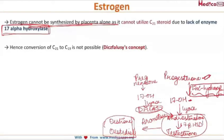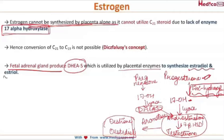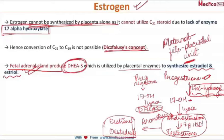So from where does this estrogen come? We have the fetal adrenal glands, which produce DHEAS — dihydroepiandrosterone. This is utilized by placental enzymes to synthesize estradiol and estriol. So the placenta depends upon precursors from the fetal adrenal gland and from maternal sources for DHEAS, which is further converted into estrogen. This entire concept of the mother, the fetus, and the placenta acting together as a maternal fetoplacental unit to secrete estrogen is called Difaluzzi's concept.